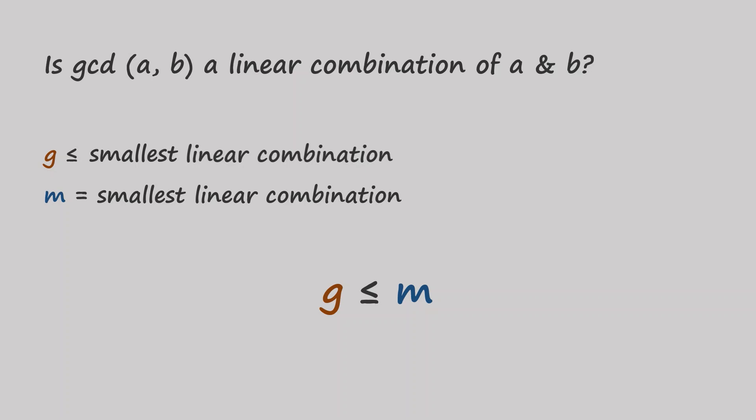The next logical step now is to see if m, like G, divides both a and b. Let's give it a try. Dividing a by m gives some quotient plus a remainder divided by m. Or it could be written this way. A equals q times m plus r.